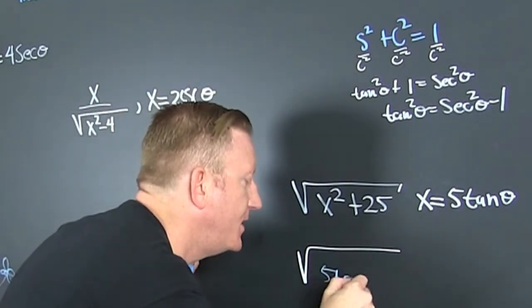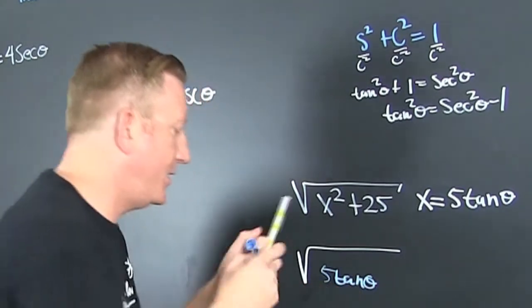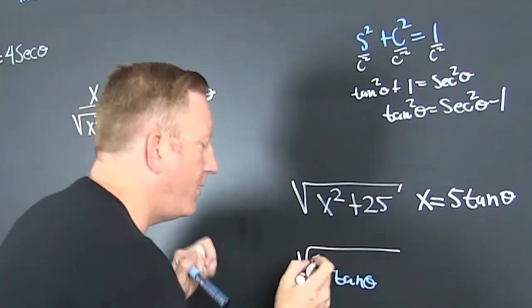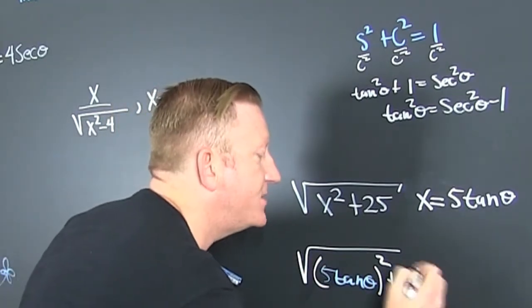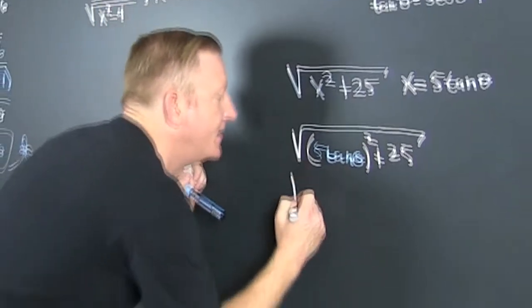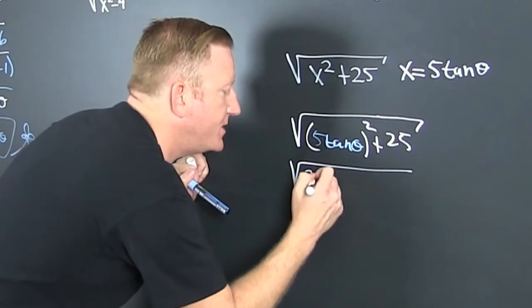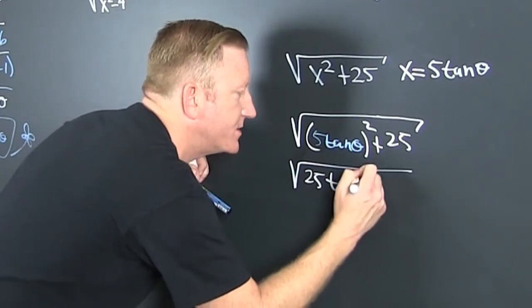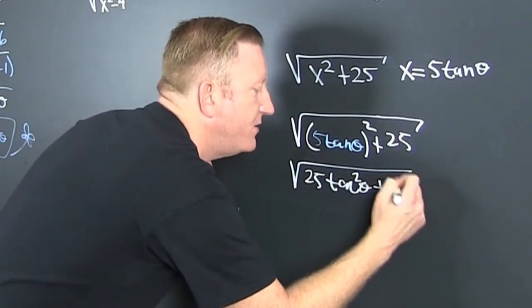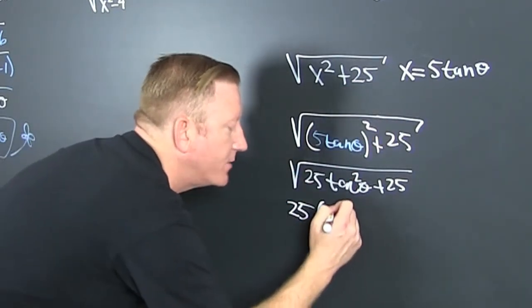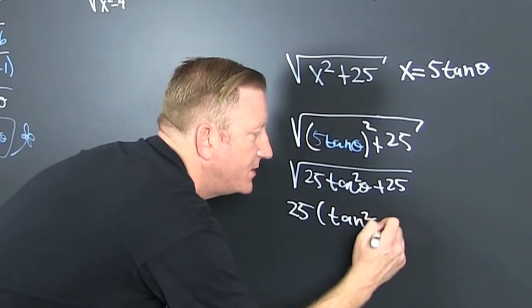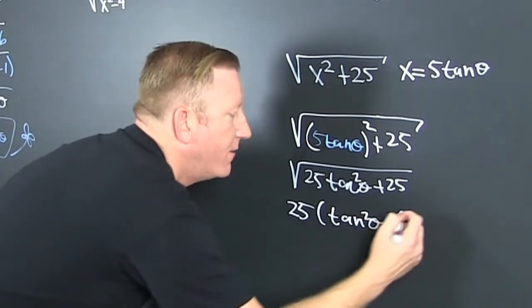That's a 5 times the tangent of theta. And then we're gonna square all that. Square equation. Yeah, that's the square root of 25 times the tangent squared theta plus 25. Not why. So I don't subtract. I factor out. And then I have that tangent squared theta plus 1. Fun.